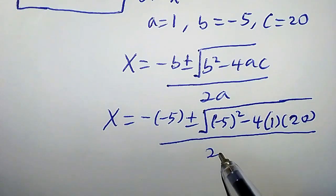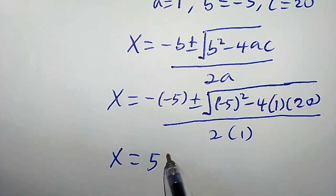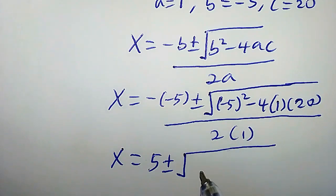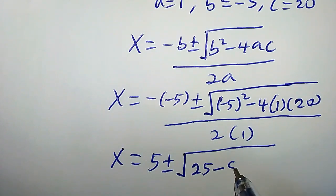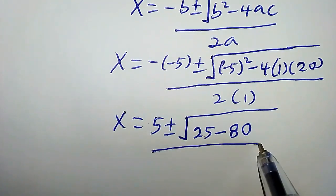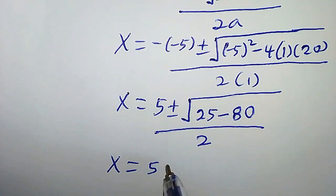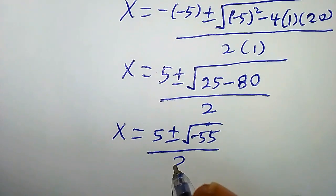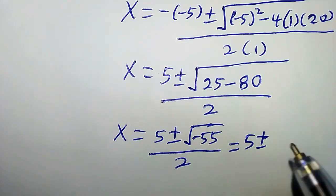All over 2 times 1. So x equals 5 plus or minus square root of 25 minus 80, all over 2. That gives x equals 5 plus or minus square root of negative 55, all over 2.